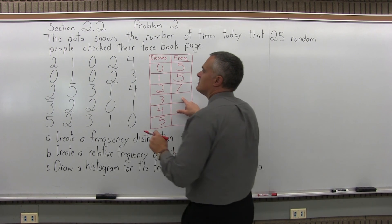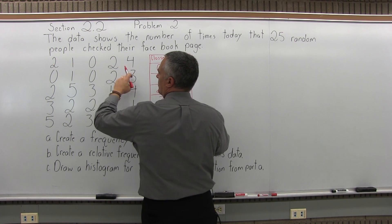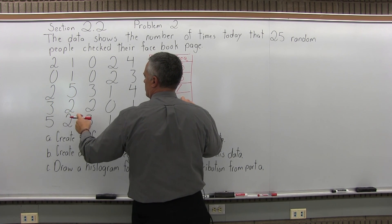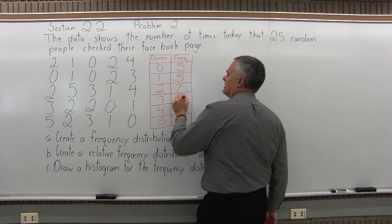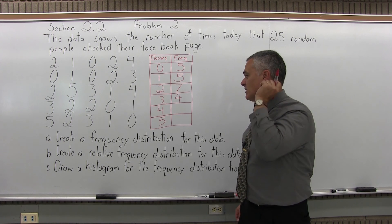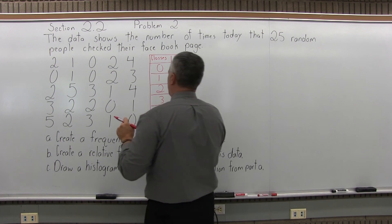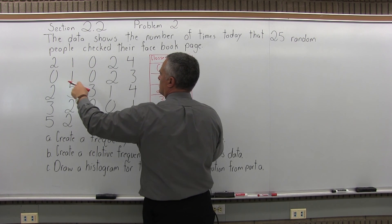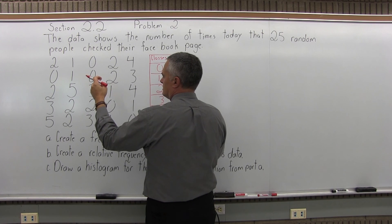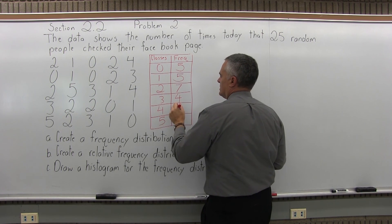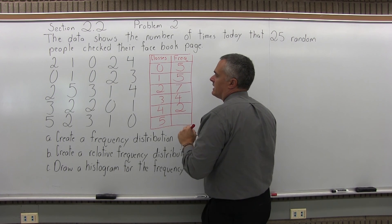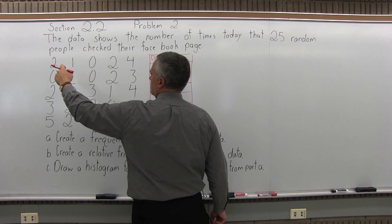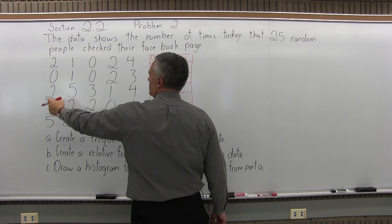How about 3 times? 1, 2, 3, 4. There were 4 people in the group that checked Facebook 3 times. Frequency of 4. How about 4 times? 1, 2, that seems to be it. And 5 times. Once here and a second time here.